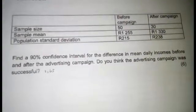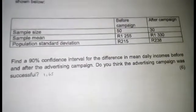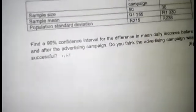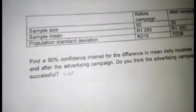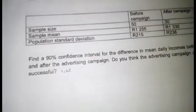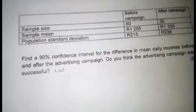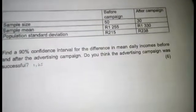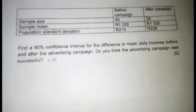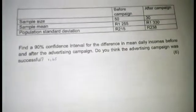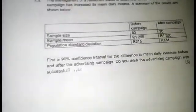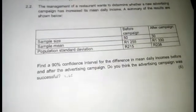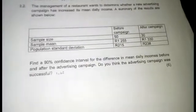The sample mean before campaign is 1,255 and after campaign is 1,330. The population standard deviation before campaign is 215 and after campaign is 238. The question asks us to find a 90% confidence interval for the difference in mean daily income before and after the advertising campaign.